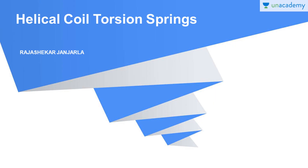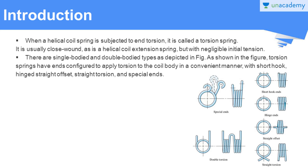Welcome again to helical coil torsion springs. When a helical coil spring is subjected to torsion, it is called a helical coil torsion spring. It is usually close wound, as is helical coil extension springs, but with negligible initial tension given by manufacturing. There are single-bodied and double-bodied types depicted in the figure. Torsion springs have been configured to apply torsion to the coil body with short hook, hinged straight offset, straight torsion, and special end types.